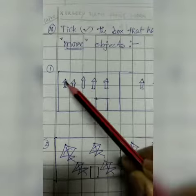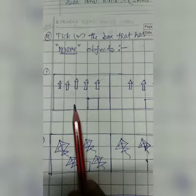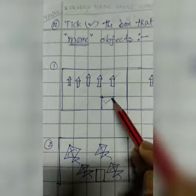So first one: how many objects are there? One, two, three, four, five. And the other one? One, two, three. So five is more than three, so you have to tick the box with more objects here. Okay, now understand?